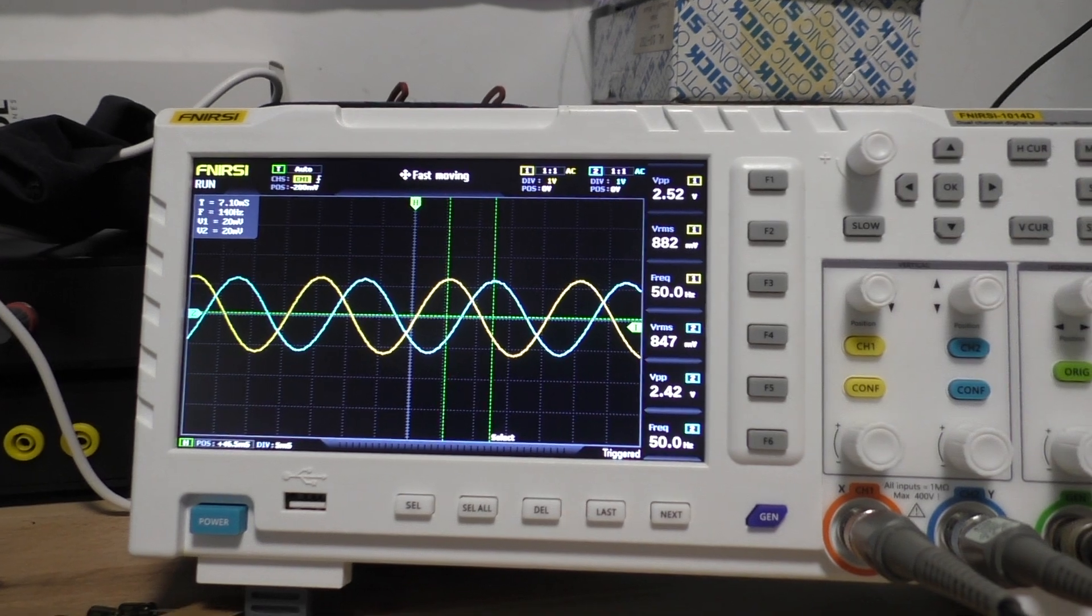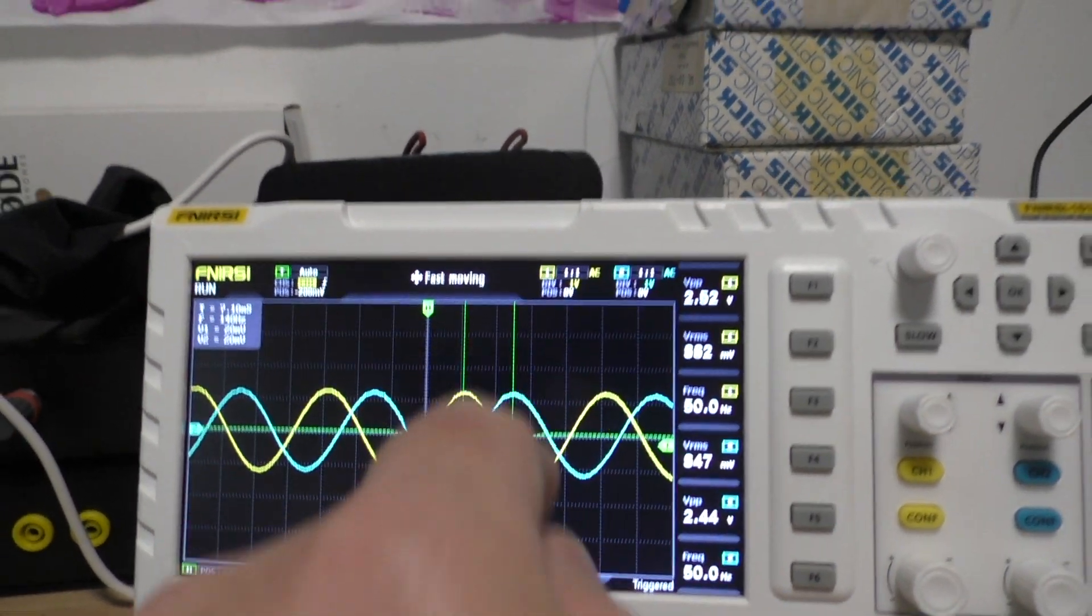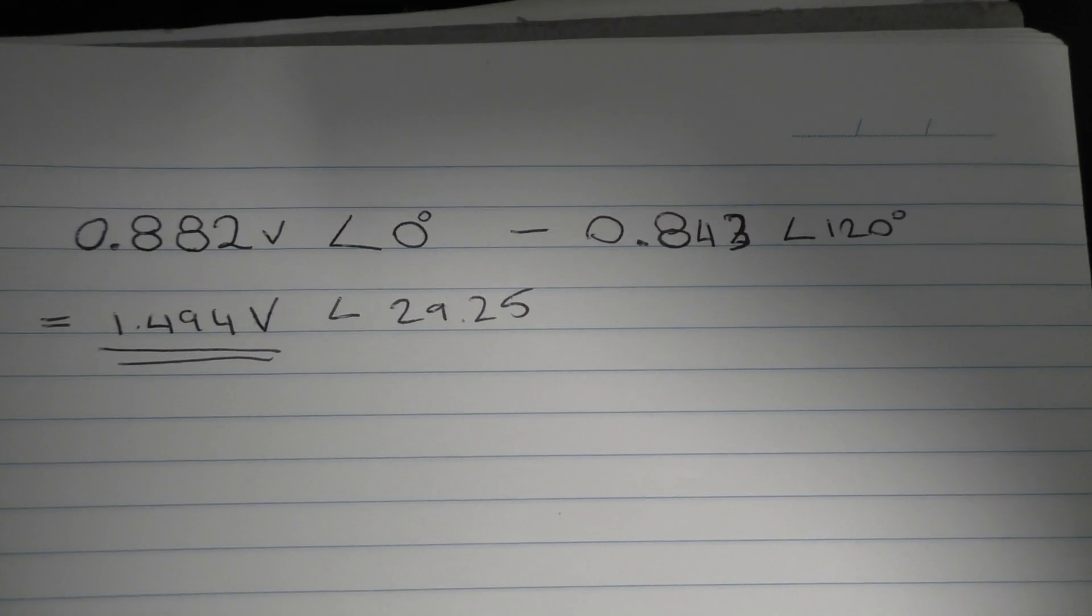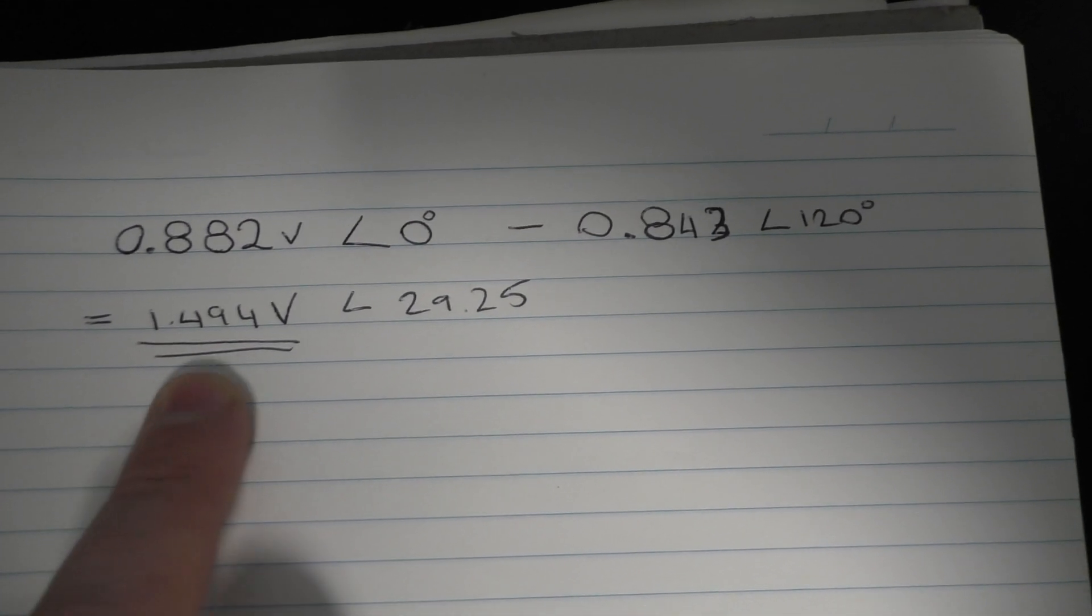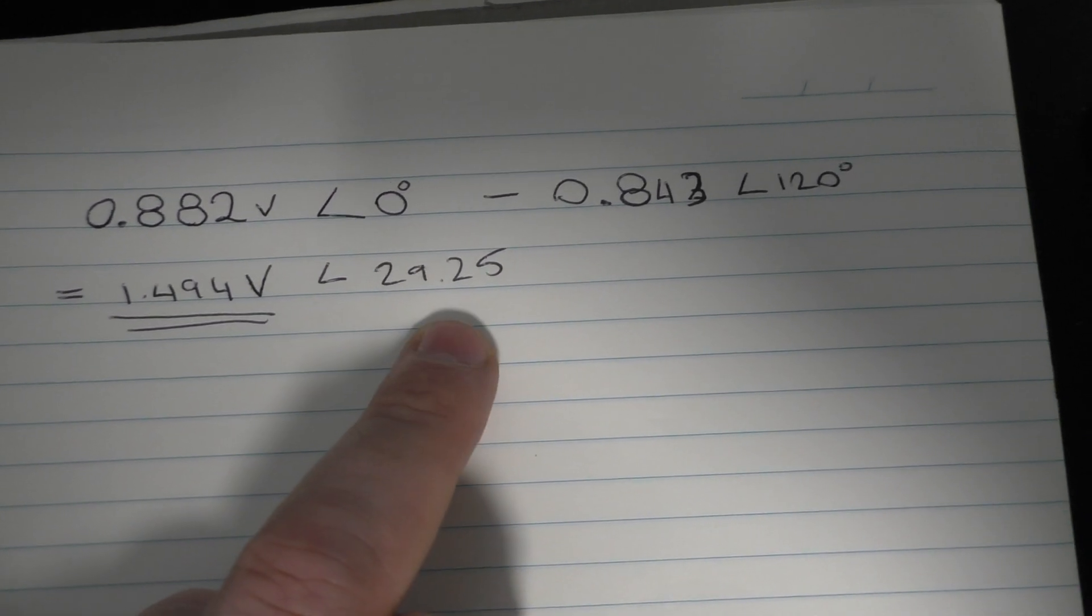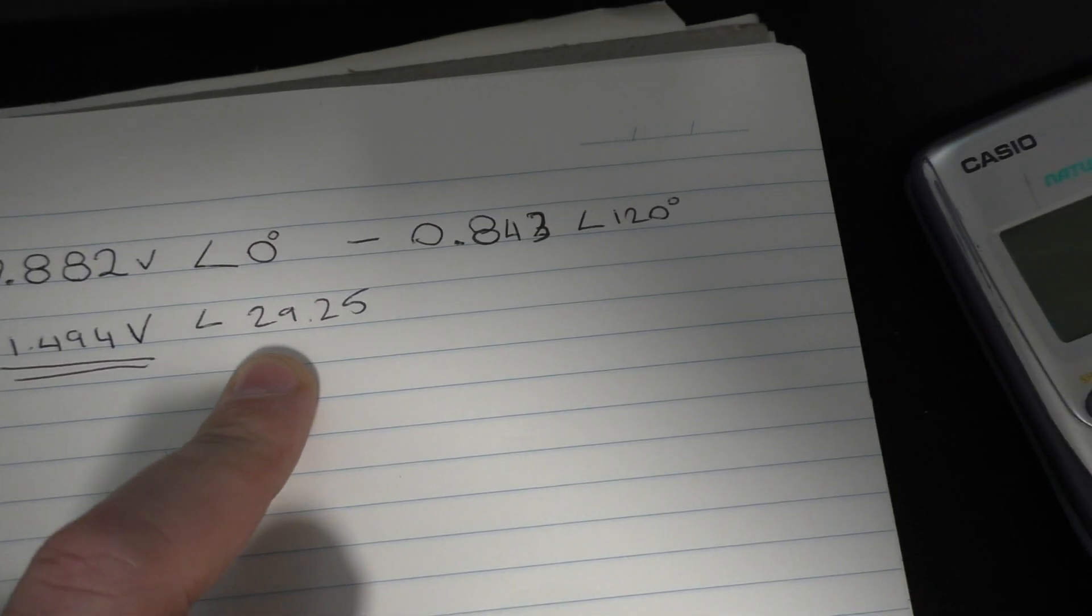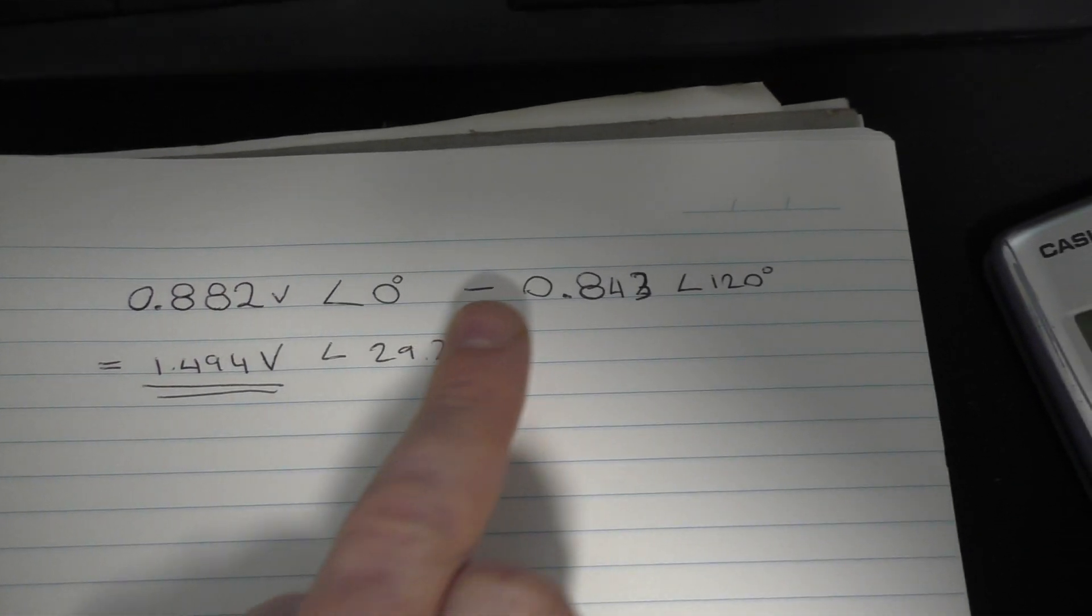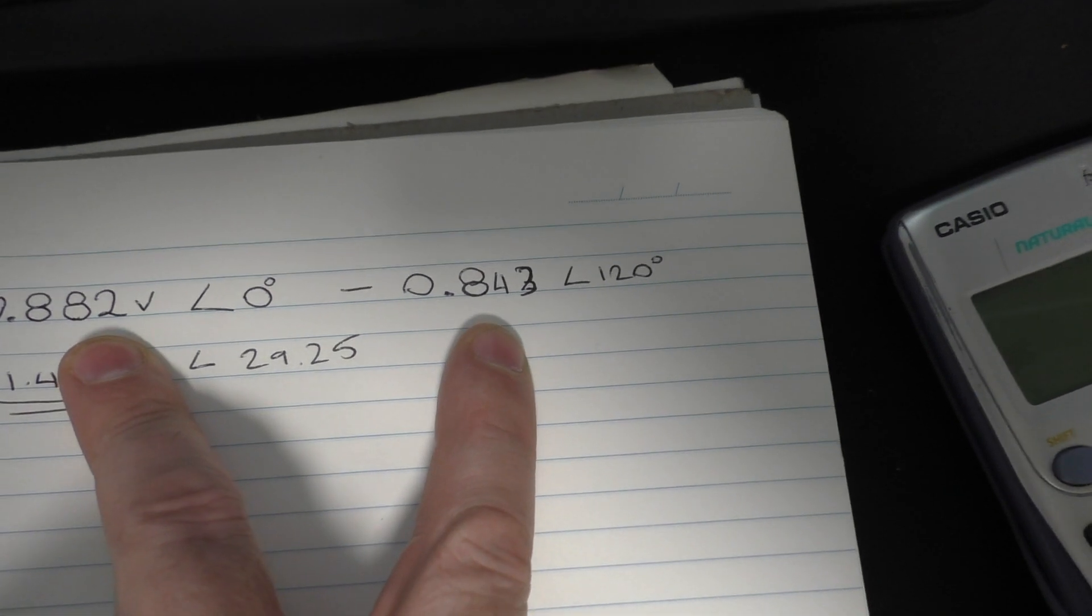So I'm looking at the voltage between there and there, and I've done the math. Between the two, I've got 1.494 volts at 29.25 degrees. Now in a three-phase system that would be 30 degrees, but it's not 30 because of my magnitude error—my magnitude difference, you should say—between the two voltages.